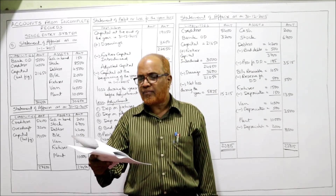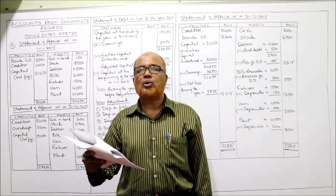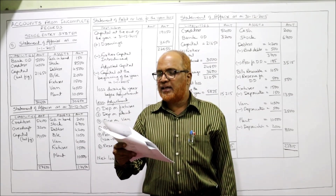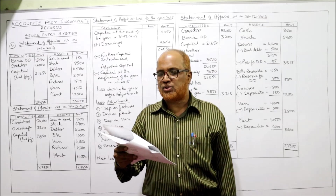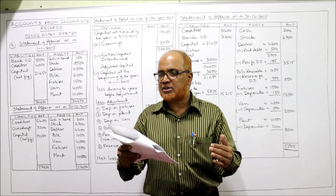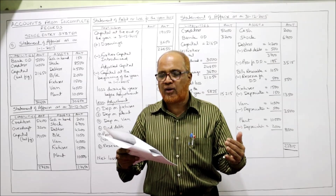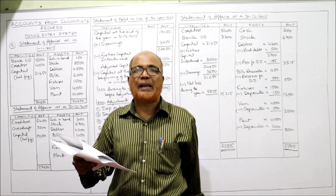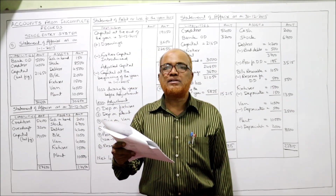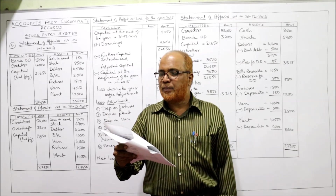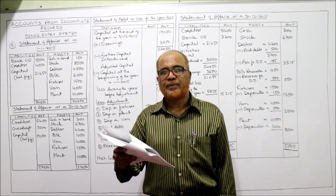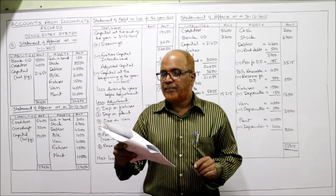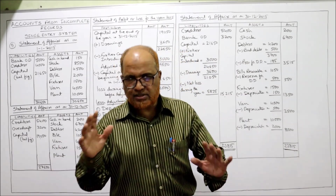Total drawings during the year amounted to 3,600. Drawings means amount withdrawn for personal use by the owner. During the year he also introduced further capital of 3,000. Depreciate fixtures at 10%, plant at 20%, and motor van at Rs.500 directly. Regarding sundry debtors, it is ascertained that Rs.500 was irrecoverable, and 5% are doubtful. There was also a need for reserving Rs.500 in respect of bills receivable.